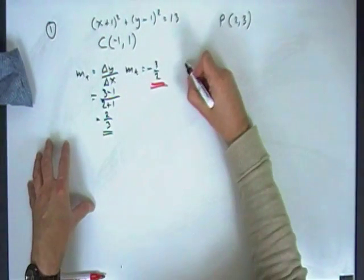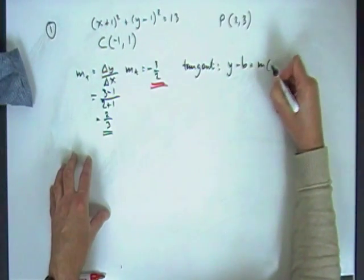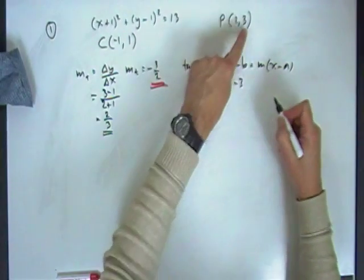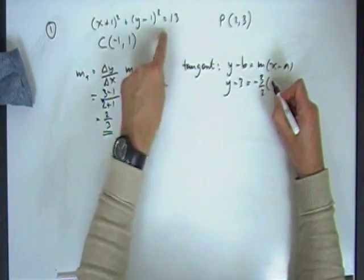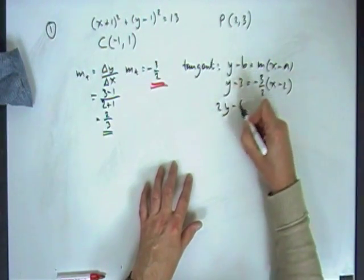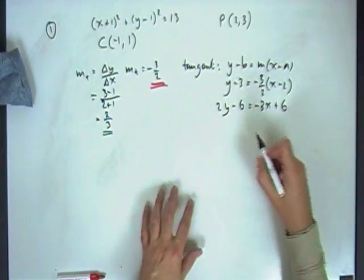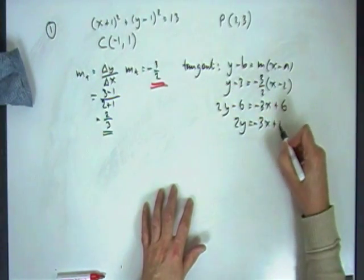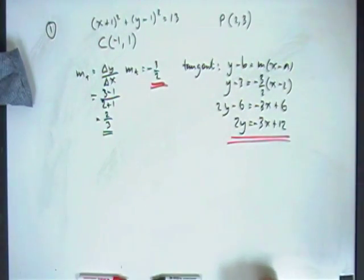Then it's just a case of, so what's the equation of this tangent then? Well, y minus b is mx minus a. Using this point, y minus the y coordinate is the gradient times x minus the x coordinate. So you've got, multiply now, 2y minus 6 is negative 3x plus 6. Any form you like, why not just 2y equals negative 3x plus 12 for the answer.